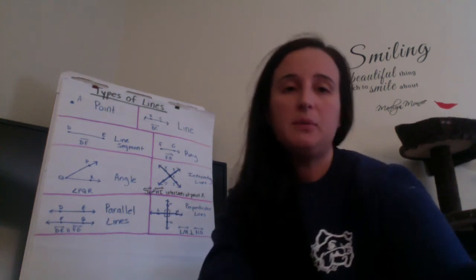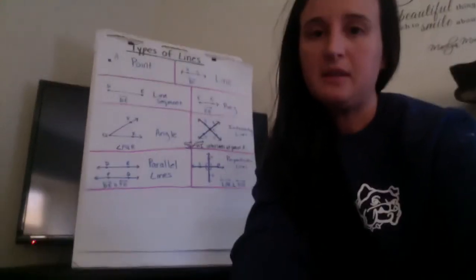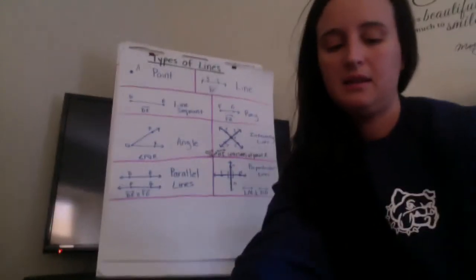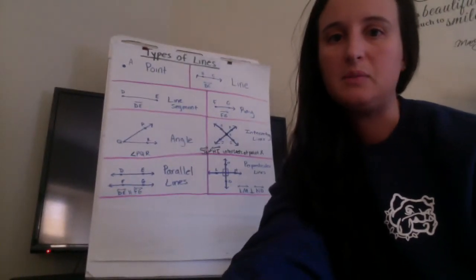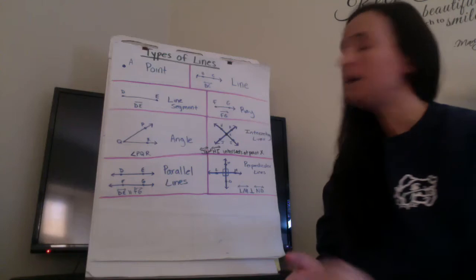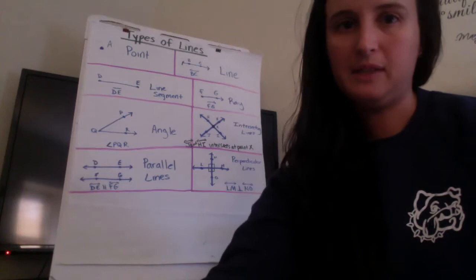So chapter 10.1 was all about different types of lines so if you can see the anchor chart over here should look familiar. We have gone over some of these things before but just to kind of again review the different types of lines.